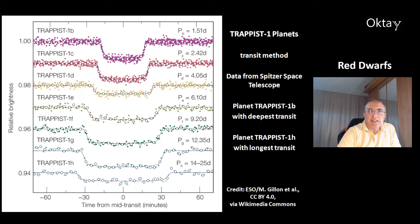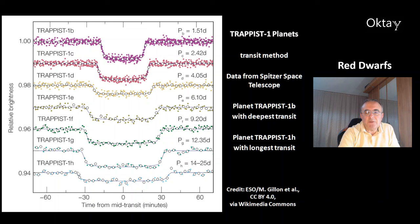This is how the planets were detected using the transit method, shown with data from the Spitzer Space Telescope. At the top you can see the innermost planet, TRAPPIST-1b, producing the deepest transit because it covers the most of the star's disk. The outermost planet, TRAPPIST-1h, has the longest transit because it takes the longest time to cross the star's disk.